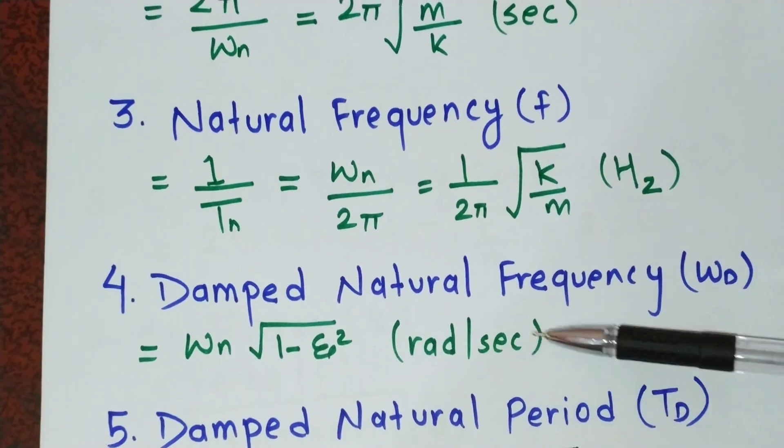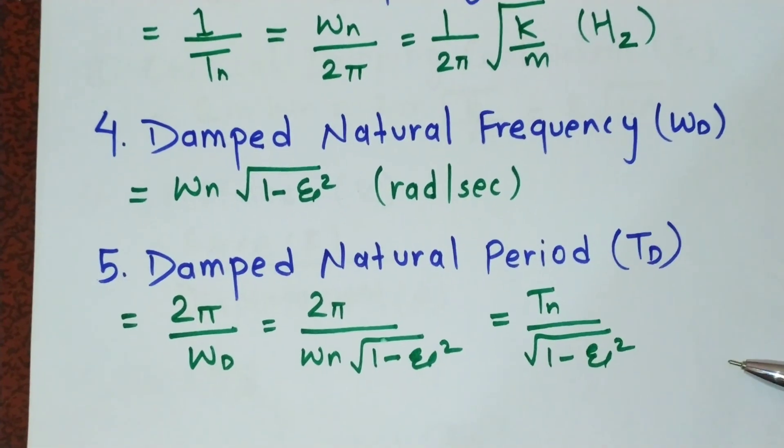Damped natural period Td equals Tn by root 1 minus ξ squared.